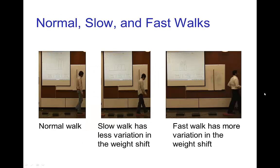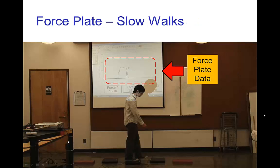But there's a noticeable difference whether we have a standard normal walk or a slow walk or a brisk fast walk. And what we're going to see is that the slow walk has less variation in the weight as weight shifts from one foot to the other, whereas for a fast walk the pattern is somewhat similar to a normal walk but with much more variation of weight. So let's look at some data from a slow walk.